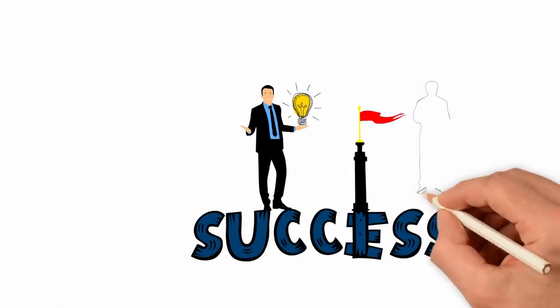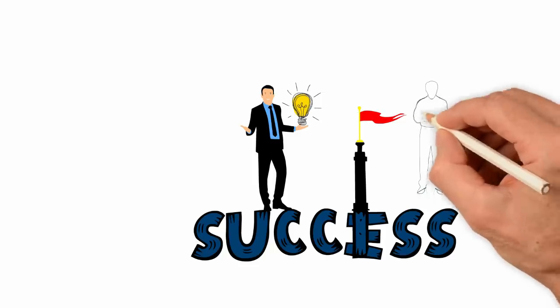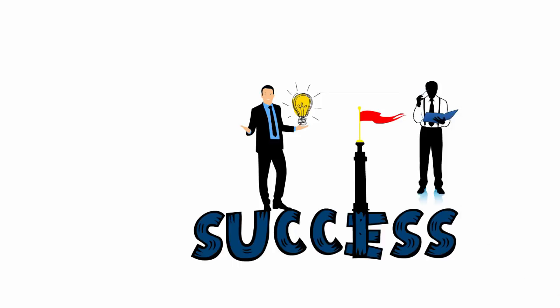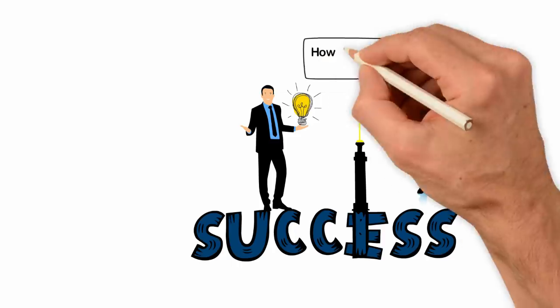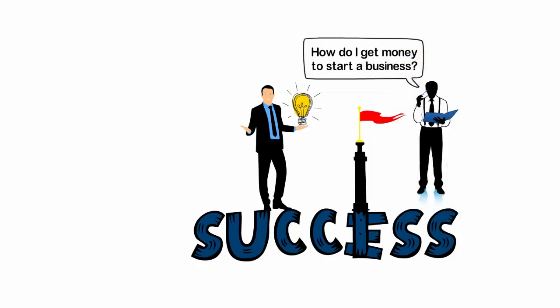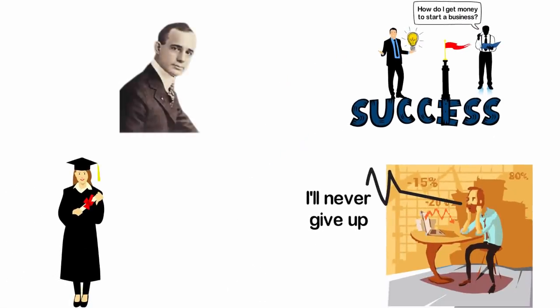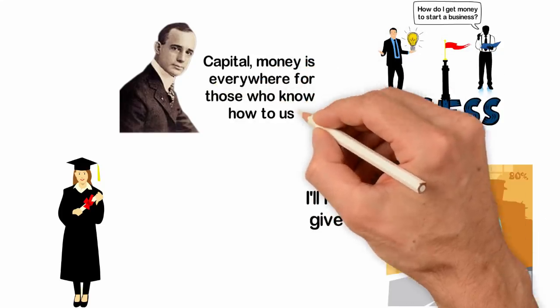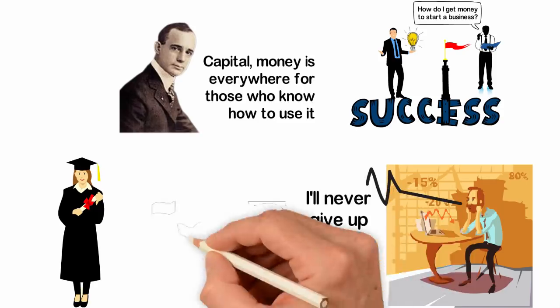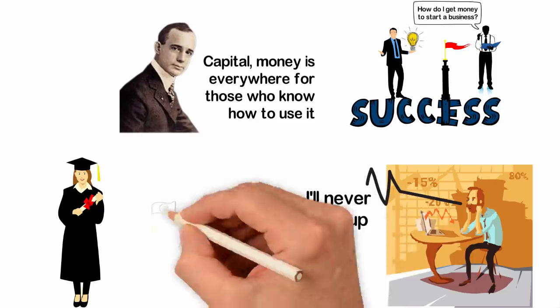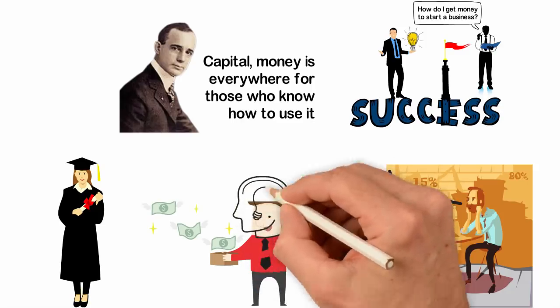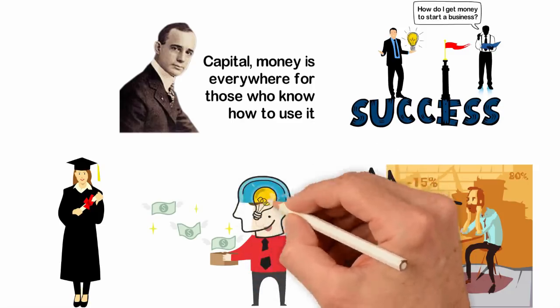Businesses are started with knowledge and skills. Just as you need to go to the university to acquire the right skills, which will end up being the capital you need, you have to acquire business knowledge and skills, which is the capital you need. So after acquiring the right knowledge, how do you get money to start a business? Napoleon Hill said, Capital, money is everywhere for those who know how to use it. I'm telling you the truth, the resources you need to start a business are everywhere if you know how to get them. The reason why most people are not attractive to the money and resources they need is that most people don't have the capital they need which is the knowledge.